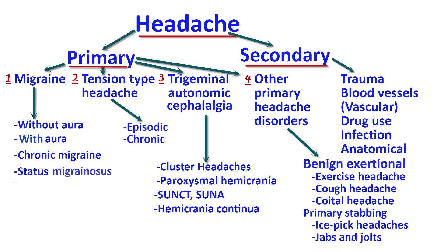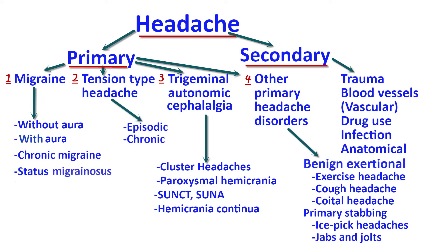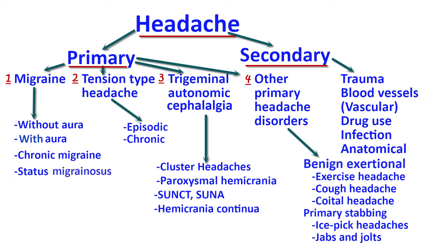The second type of primary headache is tension-type headaches, which have different features compared to migraines. The headache is bilateral — it appears on both sides of the head. The character is different: it is not a pulsing headache but rather a tightness or pressure around the head. It is mild to moderate in intensity. Tension-type headaches can be classified as episodic, appearing for less than 15 days per month, or chronic, appearing on more than 15 days in a single month.